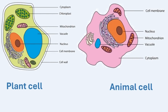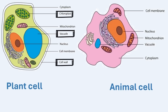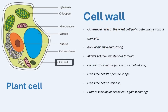Plant cells and animal cells share many similarities but also have key differences. Plant cells have cell walls, chloroplasts, and large vacuoles, which are not found in animal cells. The cell wall is the outermost layer of a plant cell and serves as a rigid framework providing support and protection. Unlike the flexible cell membrane, the cell wall is non-living, strong, and rigid, primarily made of cellulose — a carbohydrate that allows soluble substances to pass through while offering structural strength. Animal cells do not have a cell wall because animals rely on their skeletons for support and protection.